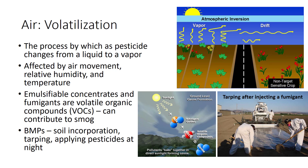Volatility is a useful property that helps disperse a pesticide in the target area and increase exposure of pests to the pesticide, but it also can lead to exposure for non-target organisms. Environmental conditions such as air movement, relative humidity, and temperature also influence volatilization.